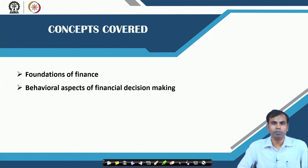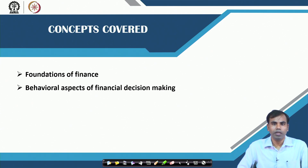All these decisions basically involve some cash flows incurred at present that have implications about cash flows in the future. The basic framework explains that the utility or benefit we are going to derive from these decisions in future should be calculated in terms of today's value, and if the benefits are more than the cost or investment we make today, then we should go ahead with the decision.